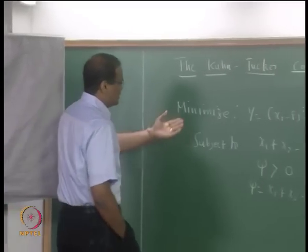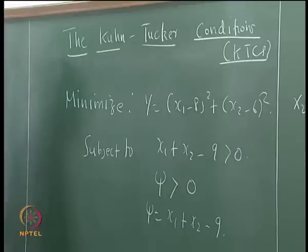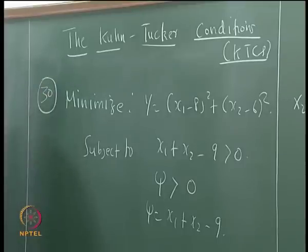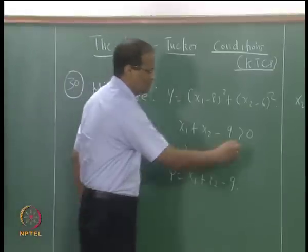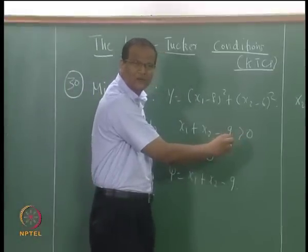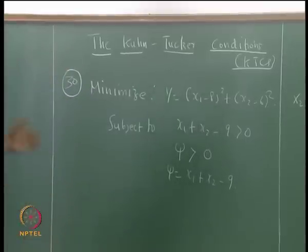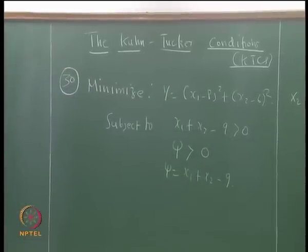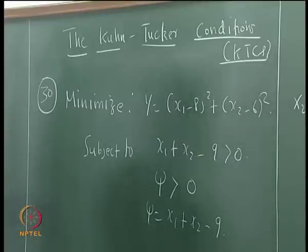This is a minimization problem. Minimize y = (x₁ - 8)² + (x₁ - 6)², subject to x₁ + x₂ - 9 > 0. We can say ψ = x₁ + x₂ - 9, so ψ > 0.